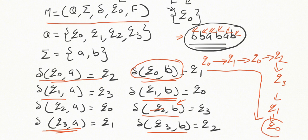The final state is q₀ and we are reaching that state after processing all symbols of the given string. So we say that the given string is accepted by the automaton.